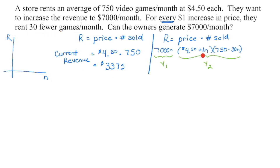So if we have one increase, we sell 30 less; two increases, 60 less, and so on. To turn it from a function to an equation, we replace the variable with a numerical value. This question wants to know: are we able to generate $7,000 a month? So I'm substituting $7,000 in for the revenue. This question doesn't say I have to do it algebraically, so I'm going to graph it — entering one side as Y1 and the other as Y2. That's going to be a little bit faster than getting it into standard form.